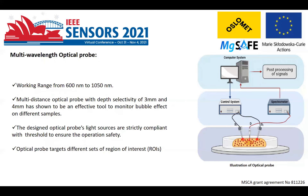We have observed the reflection in tissue mimicking phantom containing magnesium disc confirms the presence of hydrogen bubbles around them. This is an illustration of the optical probe setup. The multi-wavelength optical probe working range is from 600 nanometer to 1050 nanometer, and the multi-distance with depth selectivity of 3 millimeter and 4 millimeter is an effective tool to monitor the bubble effect on different samples. The design for the optical probe light source is strictly compliant with the threshold to ensure operation safety, not to damage tissues, and it can target different regions of interest.